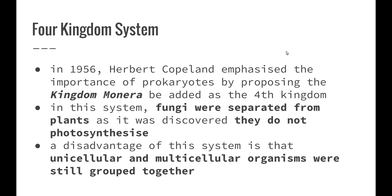The four-kingdom system came along in 1956 with scientist Herbert Copeland, who emphasized the importance of prokaryotes by proposing kingdom Monera as the fourth kingdom. By this time, the electron microscope had been introduced, allowing us to look at the organelles inside unicellular organisms. In this system, fungi were separated from plants as it was discovered that they do not photosynthesize. A disadvantage, however, is that unicellular and multicellular organisms were sometimes still grouped together.